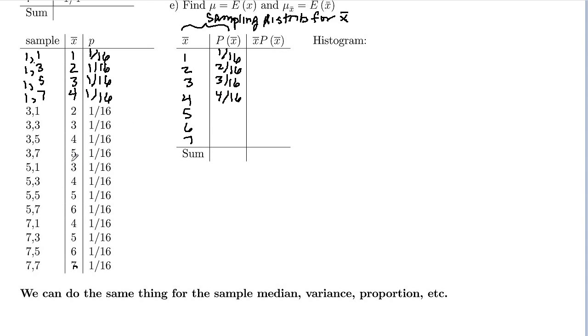And then means of five were here, and here, and here. So there were three samples out of 16 that had a mean of five. Mean of six should have two samples here and here, so two out of 16. And then mean of seven, there was just one sample. Seven and seven that had a mean of seven, so one out of 16.